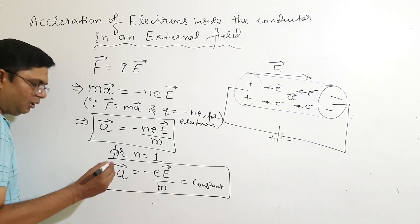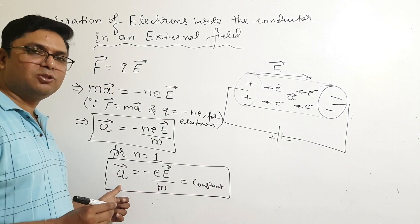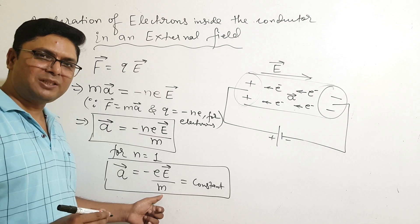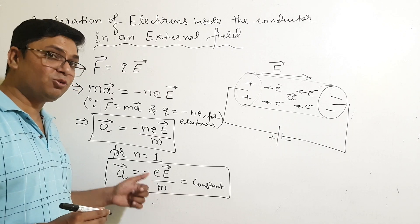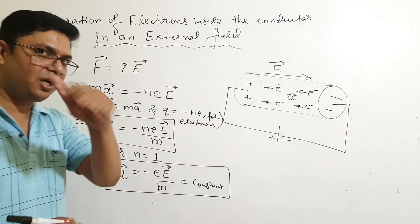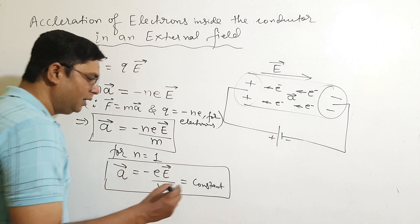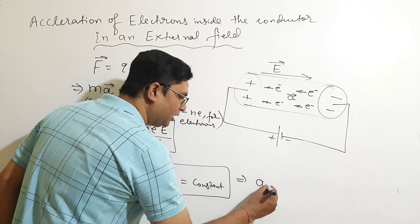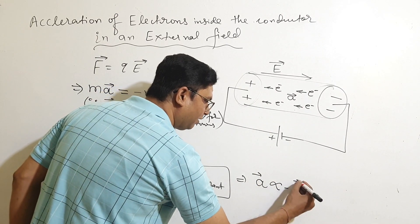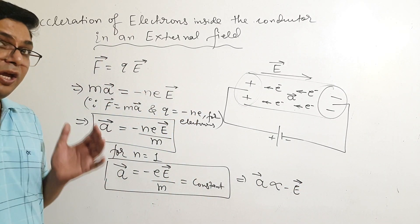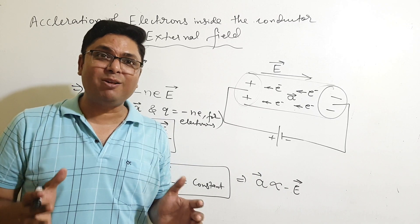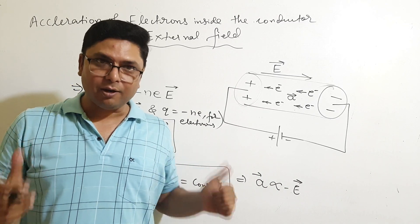We have seen that the acceleration of the electron is constant. This only depends on the electric field — that is, acceleration 'a' is proportional to the negative of the electric field. So the acceleration of an electron inside the conductor is a constant quantity. Thank you.